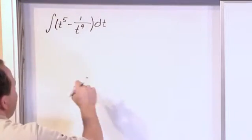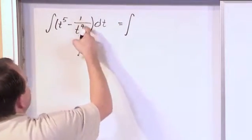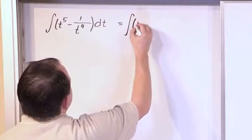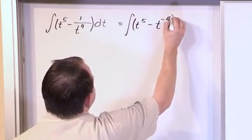So in this case, I have the following. Now let me give you a piece of advice. Any time I have something like 1 over t to the 4th power, I always change it to look like this, t to the negative 4.